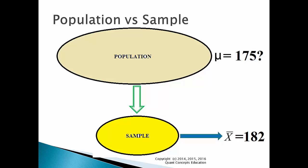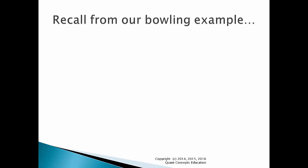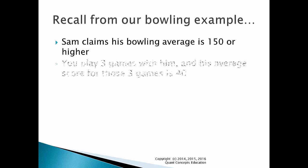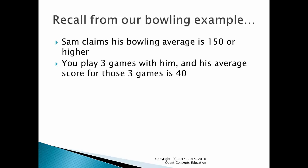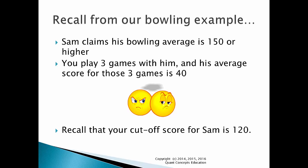Recall from the 10-minute YouTube clip that your friend Sam claimed that his bowling average is 150 or higher. You decide to play 3 games with him, and his average for those 3 games is a dismal 40. Sam's claim of having an average of 150 or higher is sounding shady. Recall that your cutoff score for determining whether Sam's claim is a lie or not is 120. That is, if his average score when bowling with you is above 120, you'll believe his claim. If it is below 120, you'll conclude he is a liar.